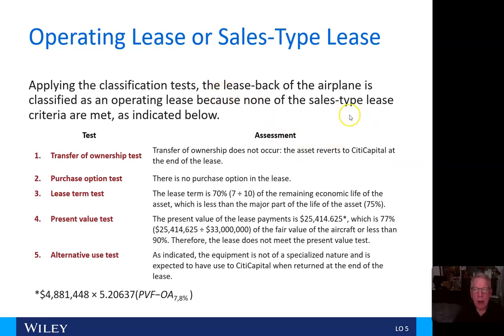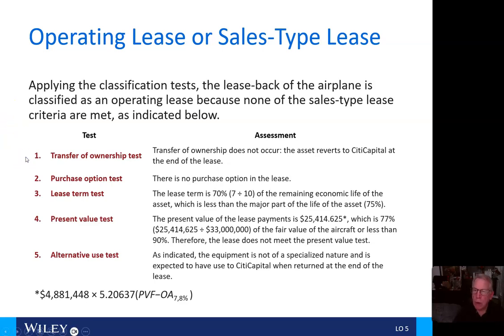The lease back of the airplane is classified as an operating lease because none of the sales-type lease criteria are met. Number one, transfer of ownership: transfer of ownership does not occur. The asset reverts to City Capital at the end of the lease.